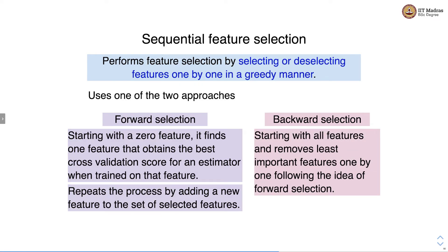In backward selection, we start with all features and remove the least important features one by one. We train an estimator, get the feature importance score, and remove the least important feature in the first step, leaving m-1 features. In the second step we repeat the process, removing the least important feature again to leave m-2 features. We keep repeating this process until we reach the desired number of features.